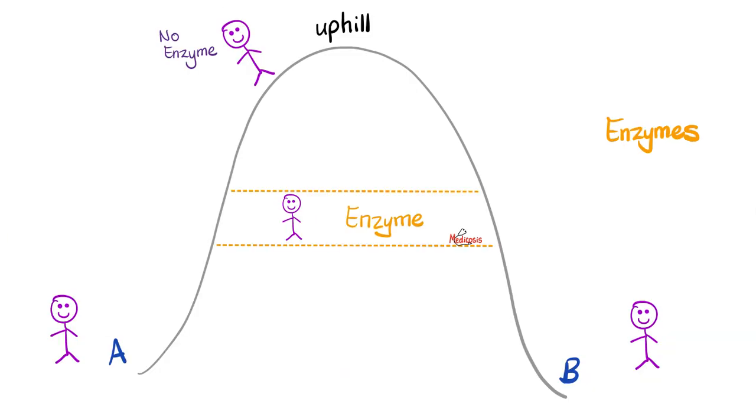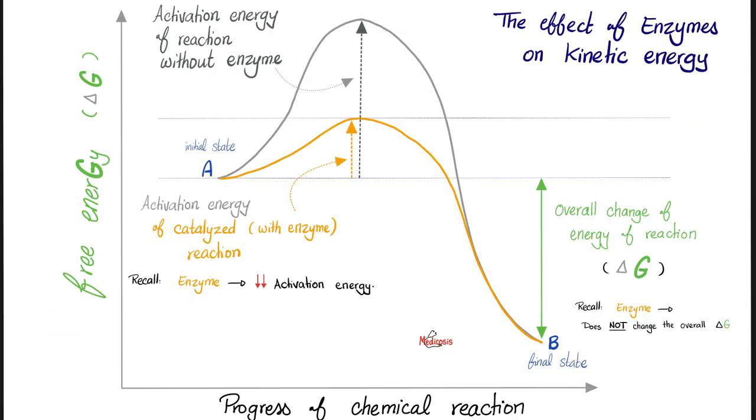As we have discussed in previous videos, enzymes provide a shortcut. However, they do not alter the origin or the destination. You're going the same way. You're reaching your destination. It just happens that you will reach it faster using a lower activation energy. As you see here, we have lowered the activation energy.